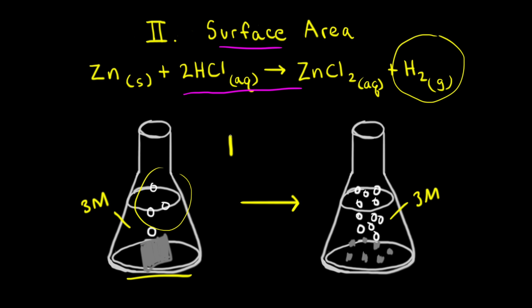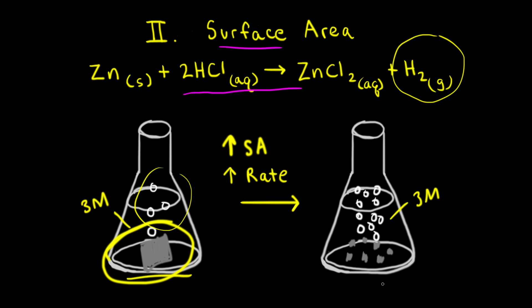So we have increased the surface area of the solid, and we observed an increase in the rate of the reaction. When we had only one piece of zinc, the rate of the reaction was limited by the surface area of that one piece. Therefore, by breaking it up into smaller pieces, we were able to increase the rate of the reaction.